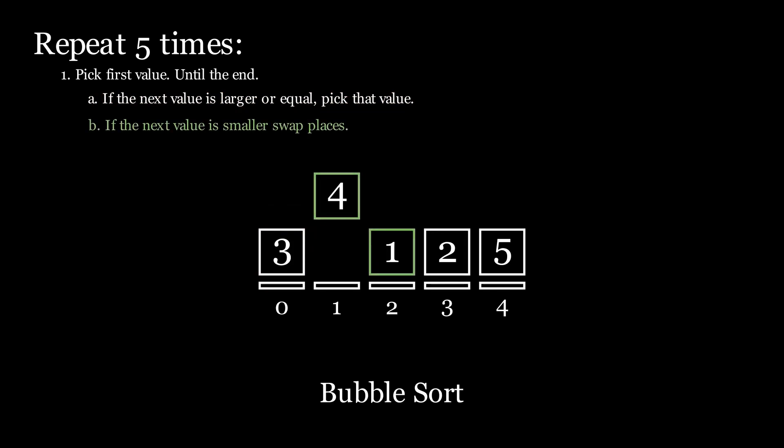Next we compare 4 with 1 and 1 is smaller than 4, so we do rule B and swap places. Next we compare 4 with 2 and once again perform rule B and swap places because 2 is smaller than 4.